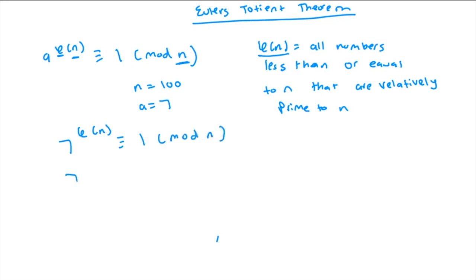Then we have 7 to the power of phi of n is congruent to 1 mod n. Or if we substitute n equal to 100 in here, we get 7 to the power of phi of 100 is congruent to 1 mod 100.